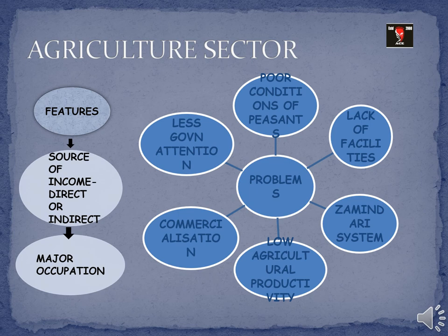Next was the zamindari system, under which zamindars imposed high taxes on peasants irrespective of their production, causing huge deterioration in peasants' conditions. Next was commercialization — the British forced peasants to grow cash crops, earning huge revenue from selling them in markets. Peasants were also forced to grow indigo and opium, which required techniques like slash-and-burn or shifting cultivation, leading to loss of soil fertility and land being unusable for five to six years. All of this led to a fall in agricultural productivity, with government attention towards the sector remaining very low.